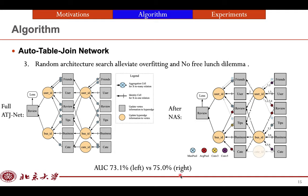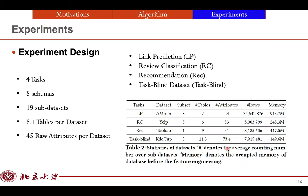We conduct extensive experiments on four tasks, eight various schema and 19 sub-datasets with respect to rating prediction, review classification, recommendation, and the task-blind challenge. These are four tasks. There are 8.1 tables per dataset and 45 raw attributes per dataset.